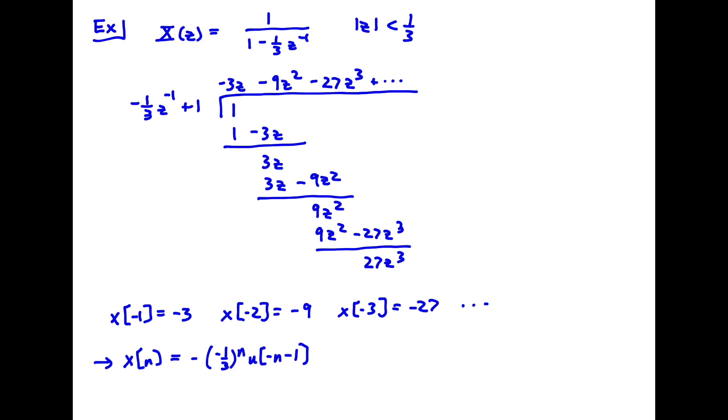So my x of n would be minus times, this is written incorrectly here, minus 1 third to the n, u of minus n minus 1. So that's the inverse transform we would have gotten out of our table. And we can see that it also comes out of the long division. But what this example demonstrates is that you have to be conscious of the ROC when you're setting up your long division to get the power series. So we can't just work by rote. We have to always think about the ROC and think about whether the way we set up the long division is leading us to the correct power series expansion.